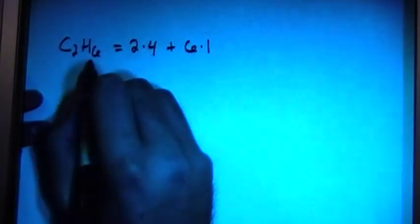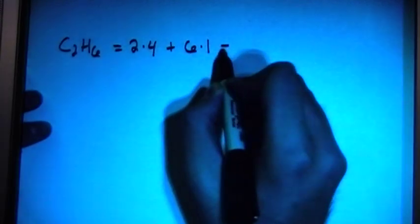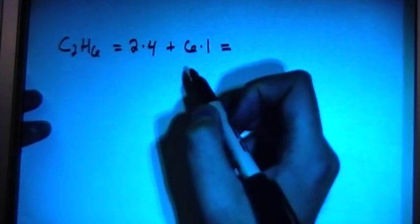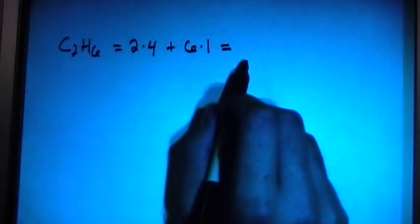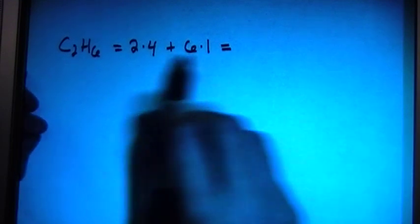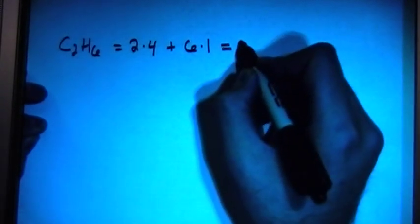We have ethane, so it's going to be C2H6. And now this is going to give us 2 times 4 valence electrons from the carbon, plus 6 times 1 valence electron from each hydrogen. So the total number of valence electrons in this molecule is going to be 14.